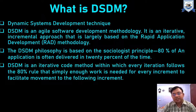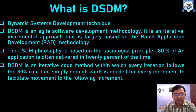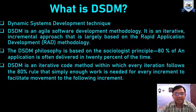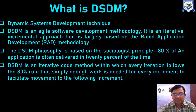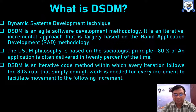It has been observed that we do not give sufficient or proportionate time to each phase of development. For eliminating this drawback, DSDM has been developed to address this problem. DSDM is an iterative method in which every iteration follows the 80% rule — simply enough work is needed for every increment to facilitate movement to the following increment.